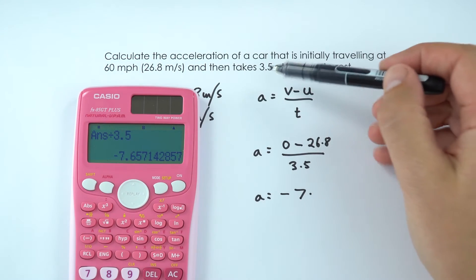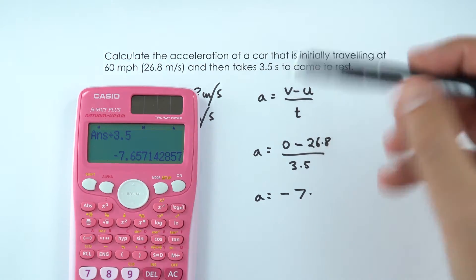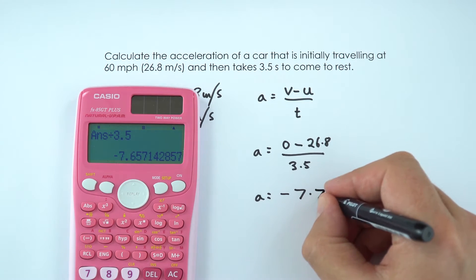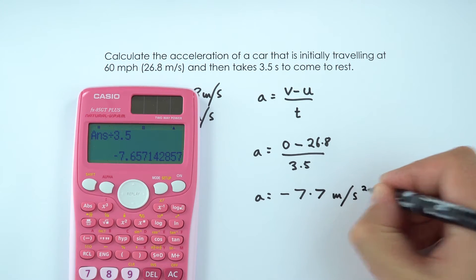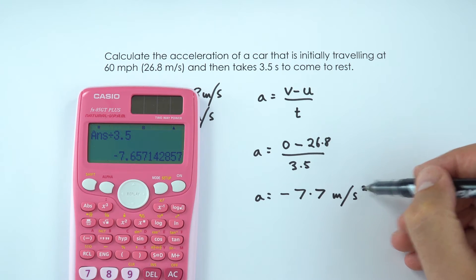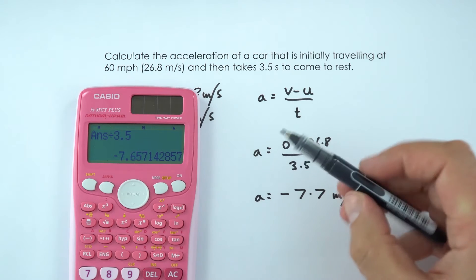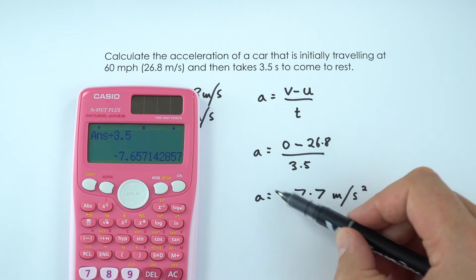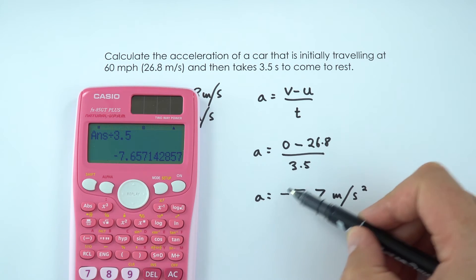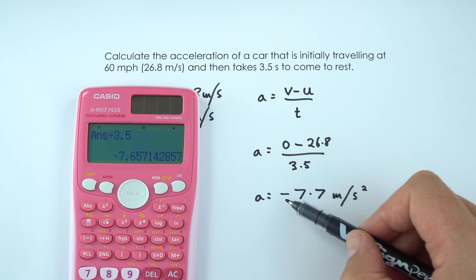Now I'm going to give my answer to two significant figures like the time here, so that's equal to minus 7.7 meters per second squared. You've got to remember that we've got per second squared because it's acceleration, so don't forget that little 2. And also because it's slowing down we have a negative acceleration, a deceleration, which is why I've got the negative sign in here.